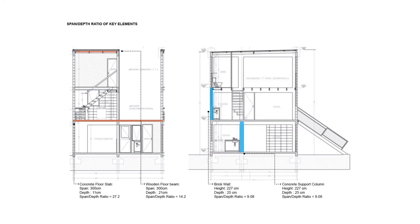In terms of span-to-depth ratio of key elements, the wooden beam has a span-to-depth ratio of 14.2, while the concrete support column has a height-to-depth ratio equal to 9.08.